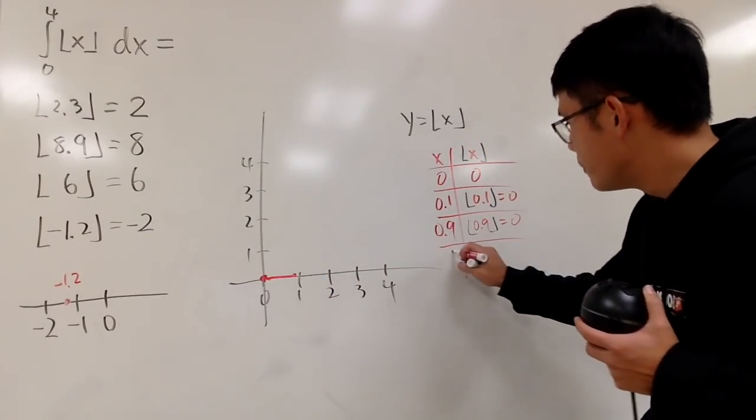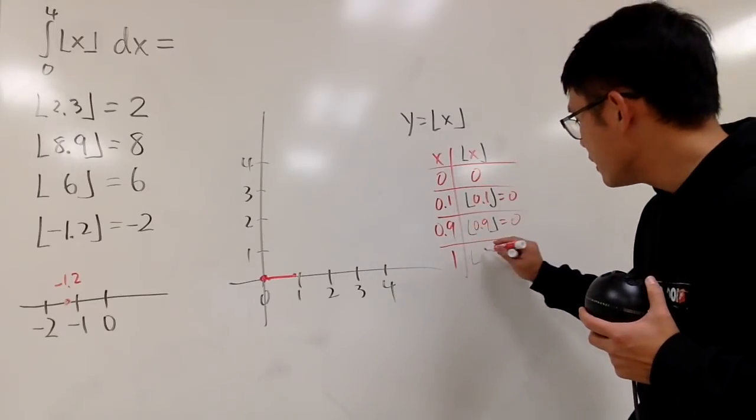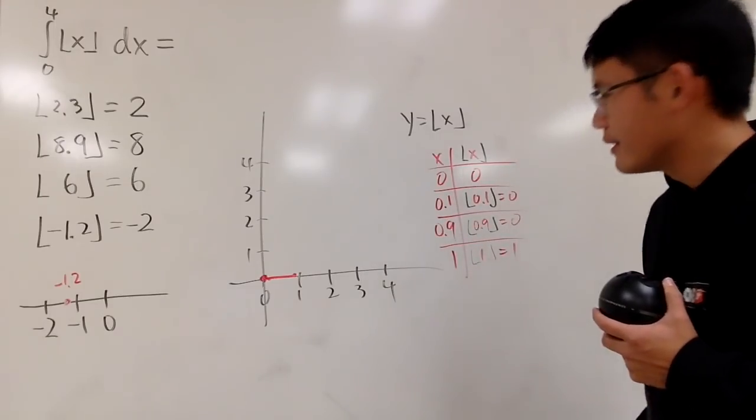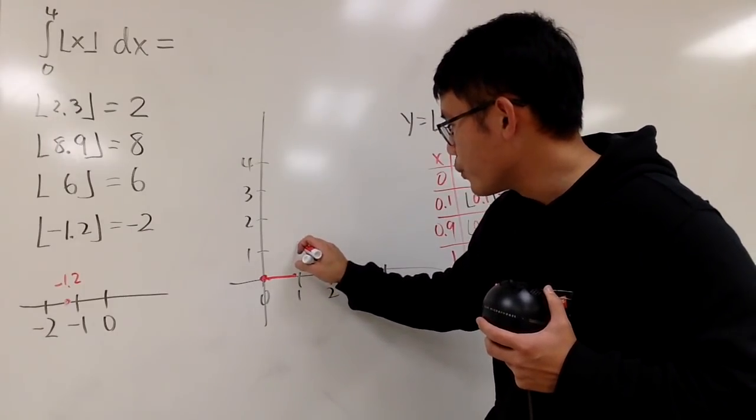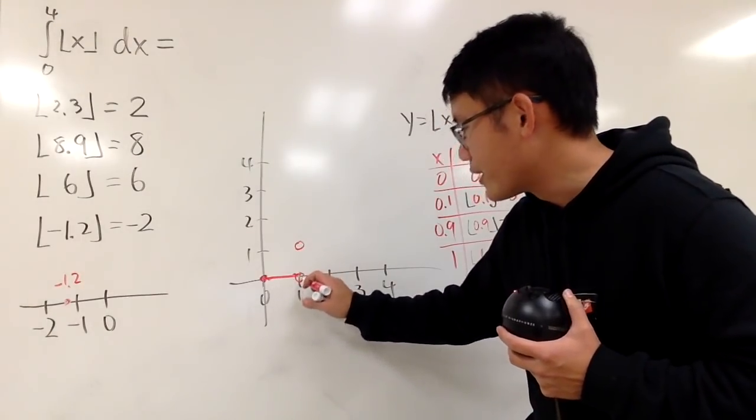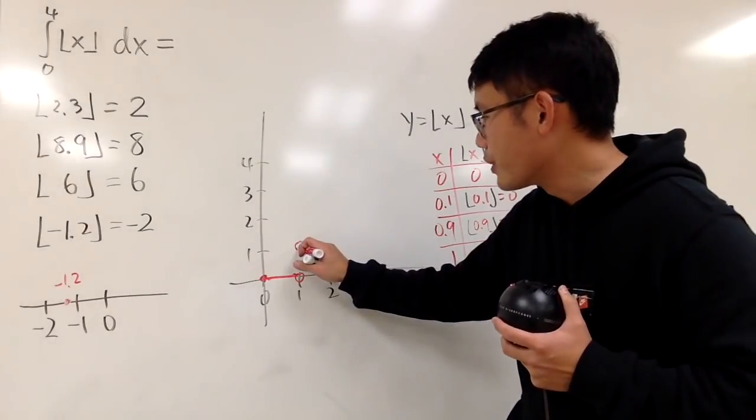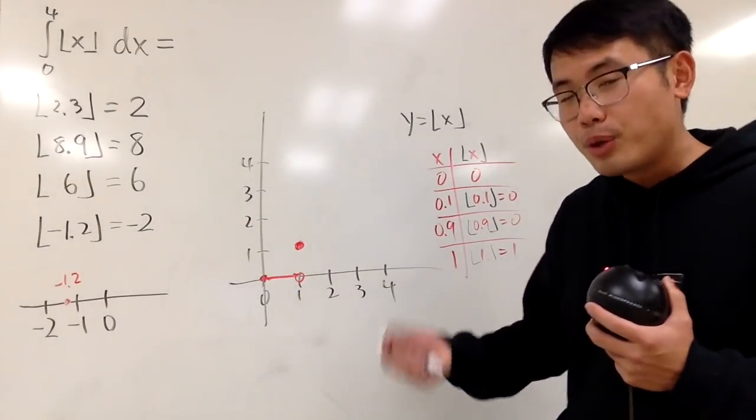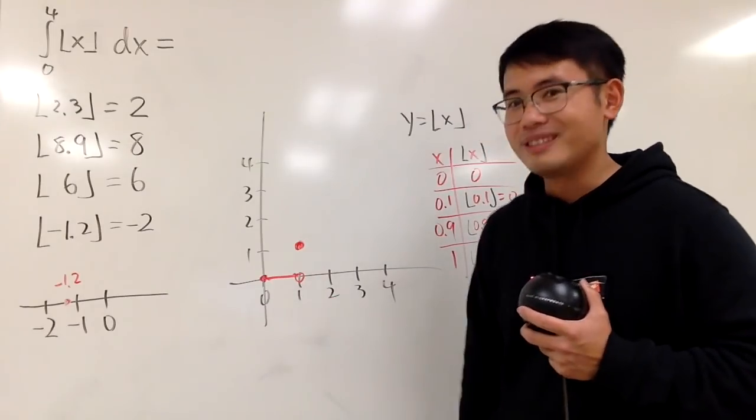However, once you hit exactly 1, well, the floor of 1 is exactly 1 because it's an integer. There is a jump from 0 to 1, 1 right here. So be sure you open a circle right here, and then there's a jump, and since you have 1, 1, this circle here is actually enclosed. So you pretty much just enclose the left-hand point all the time, and you keep the right-hand point open.